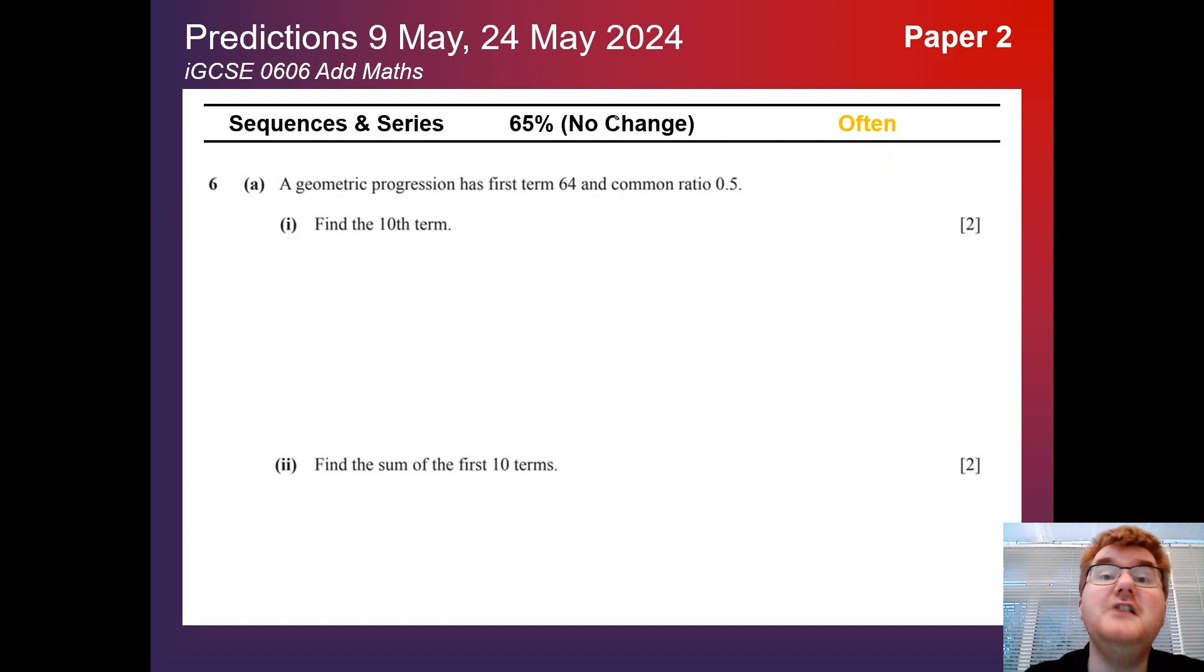Sequences and series, no change at 65%. You saw on Paper 1, about 50%. So they're going to come up on one of the papers in some shape or form. Make sure you know your arithmetic and geometric progressions, how to work out terms, working backwards.